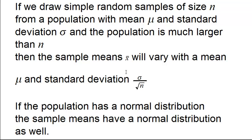We are going to work on another example for distribution of sample means. The way it works is that if we have a population with mean mu and standard deviation sigma, and we are drawing simple random samples of size n from this population, then the sample means x-bar will vary with mean of mu and standard deviation of sigma over square root of n.